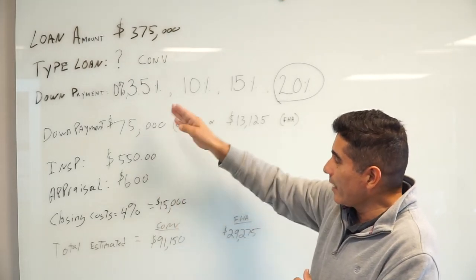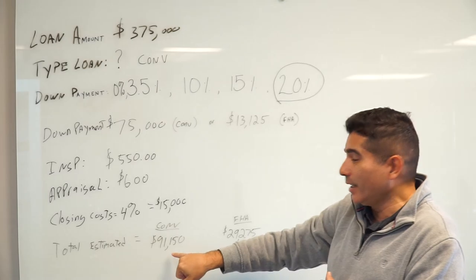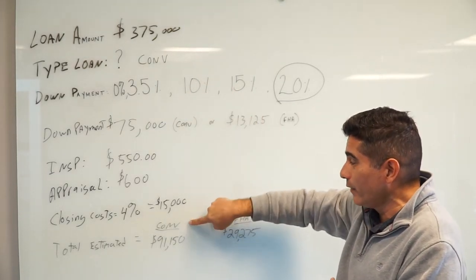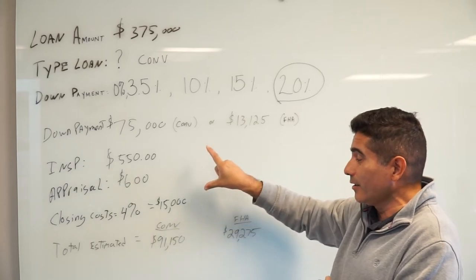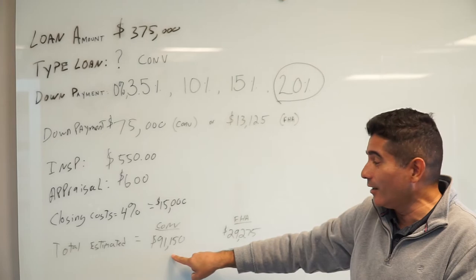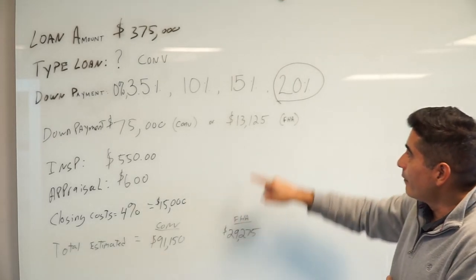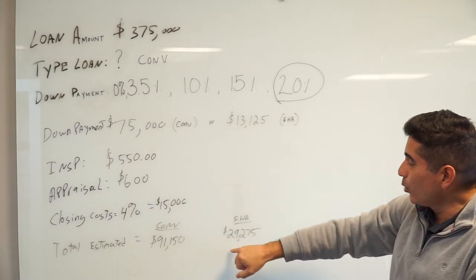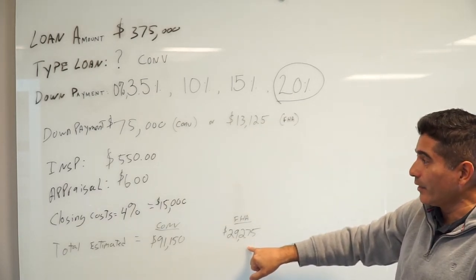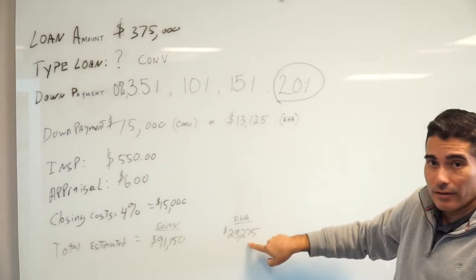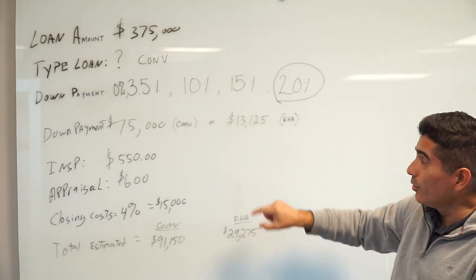If we add them up, the total estimated money you need to buy a house at three hundred and seventy-five thousand for a conventional loan with this particular lender and those costs is ninety-one thousand one hundred and fifty dollars that you need to have in the bank. For a FHA loan, which for most first-time homebuyers this is going to be you, you would need twenty-nine thousand two hundred and seventy-five dollars if you add that and these charges together.